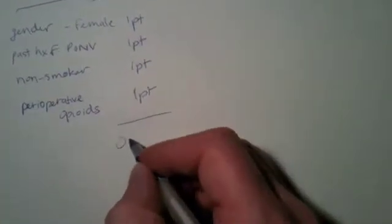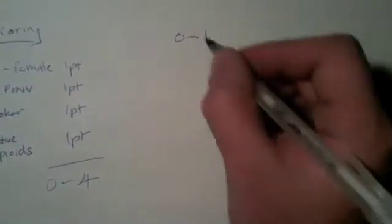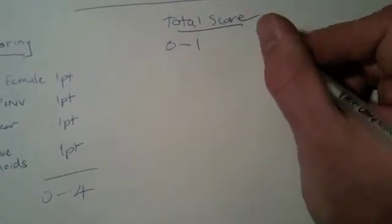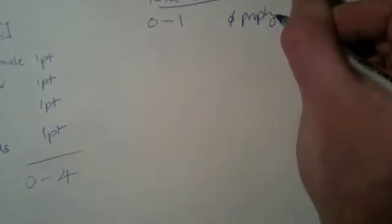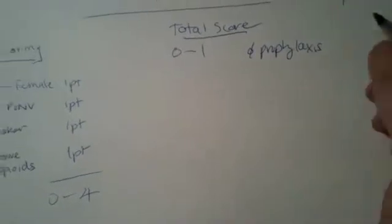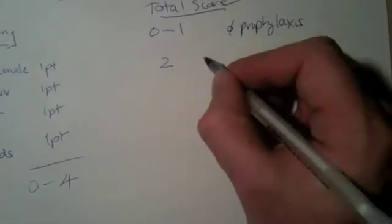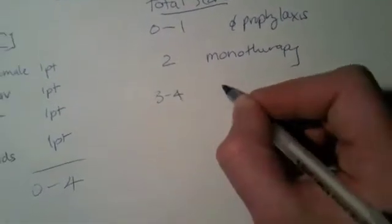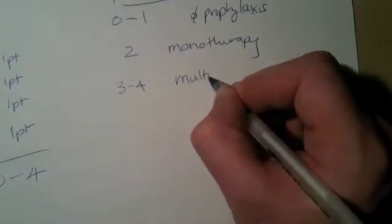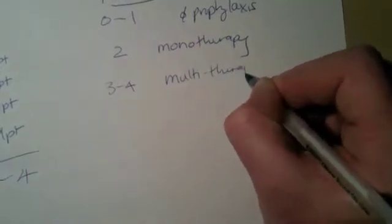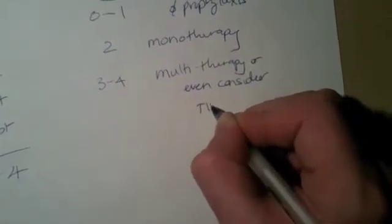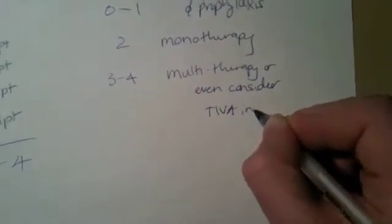We add this up for a total of between zero and four. If they have zero to one for total score, don't even need to worry about prophylaxis—you don't give them anything during the procedure. If they have two, you can use monotherapy. And if they have three or four, you can use multi-therapy or even consider TIVA instead of a general anesthetic.